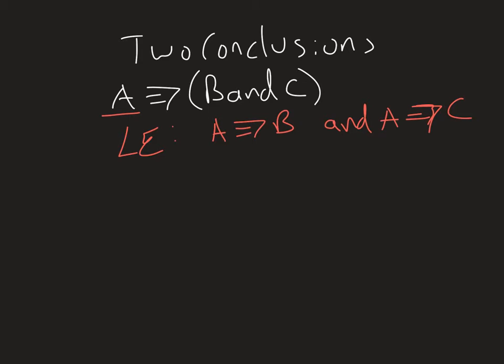Now that might seem a little strange how I can just break it up instantly, but if A implies B and C, where B and C are again phrases, well it would make sense that A can get you either one individually as well.